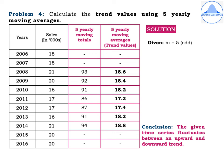Find the five-yearly moving averages by dividing totals by 5. The first two are blank. Then: 93 ÷ 5 = 18.6; 92 ÷ 5 = 18.4; then 18.2, 17.2, 17.4, 18.2, 18.8; and the last two are missing. Observing the trend values — they first decrease from 18.6 to 17.2, then increase back to 18.8. So the conclusion is: the given time series fluctuates between an upward and downward trend. The word 'oscillates' can also be used — the given time series oscillates between an upward and downward trend.